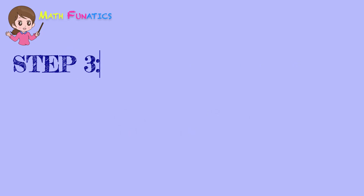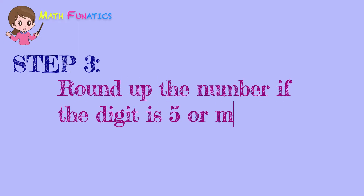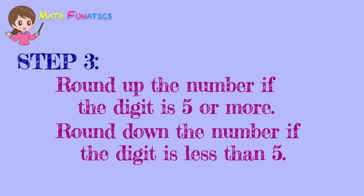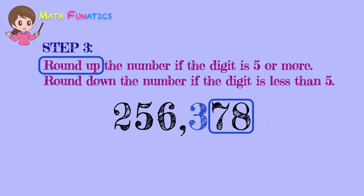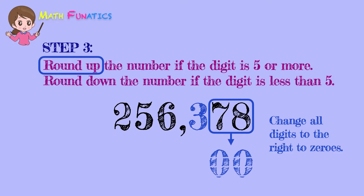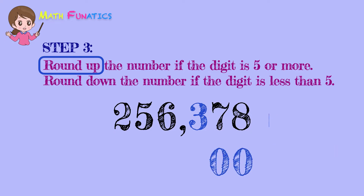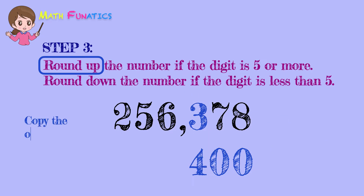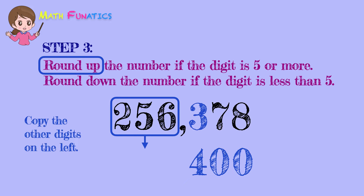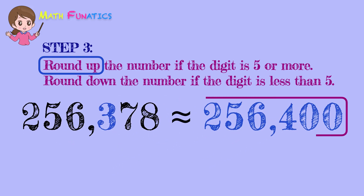Step 3: Round up the number if the digit is 5 or more, or round down the number if the digit is less than 5. The digit 7 that is on the right of the hundreds place is more than 5, so we have to round up the number. In rounding up the number, change all digits to the right of the hundreds place to zeros. Next, add 1 to the rounding place — so 3 plus 1 is 4. Finally, copy the other digits on the left. Therefore, 256,400 is the rounded value to the nearest hundreds.